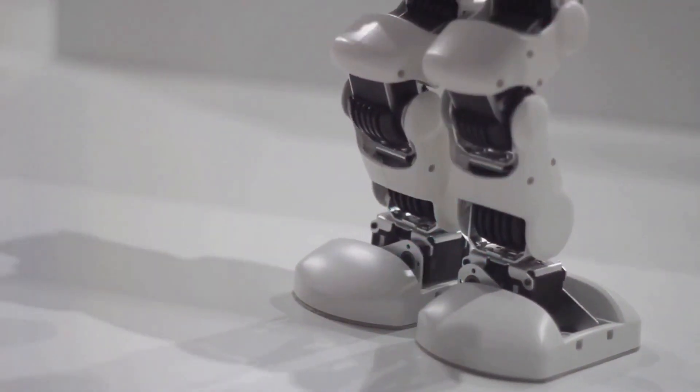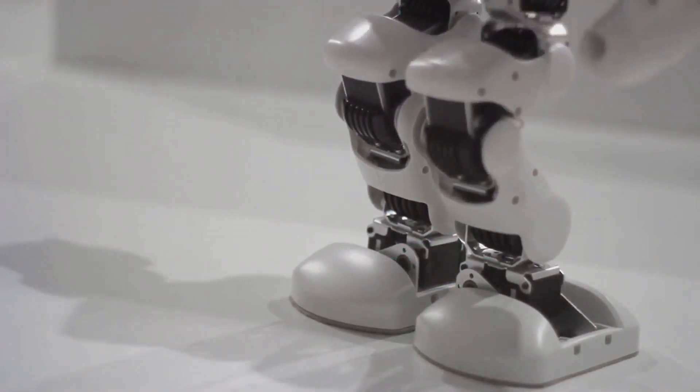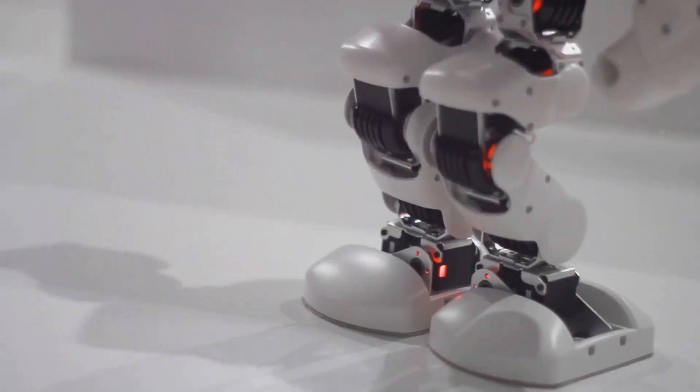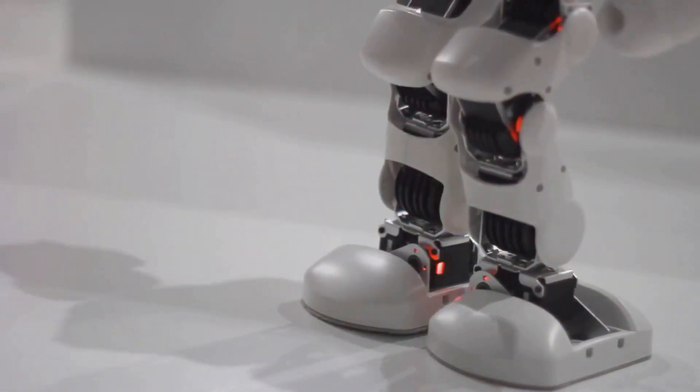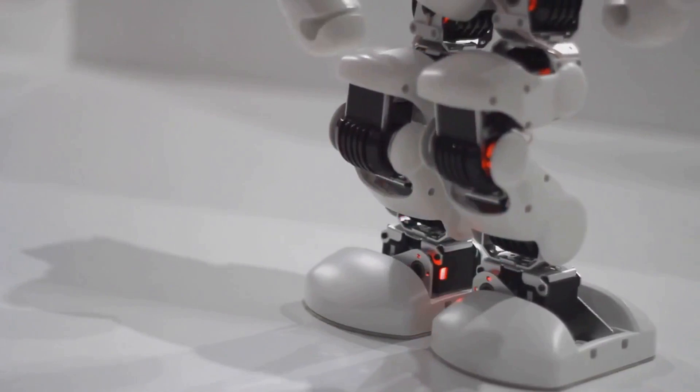Sensors play a crucial role in the robot's ability to interact with its environment. They can detect light, sound, temperature, pressure, and much more, allowing the robot to sense its surroundings.